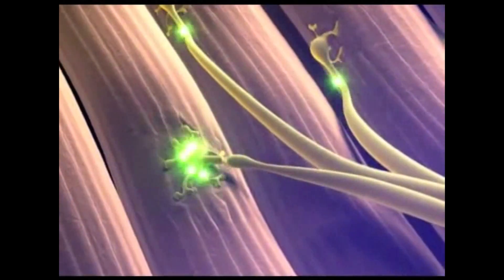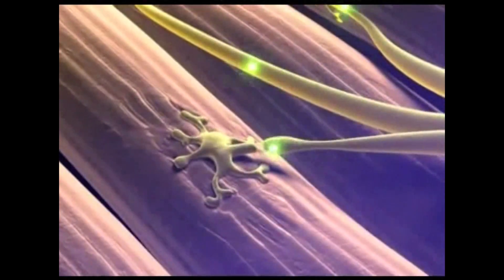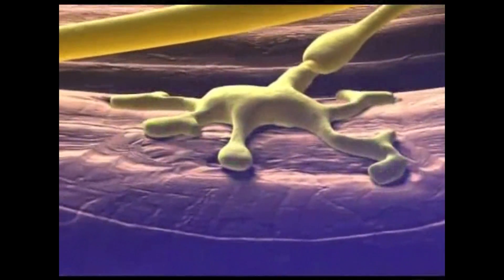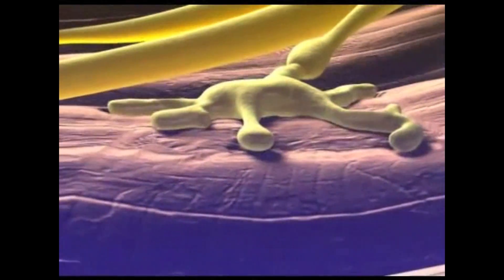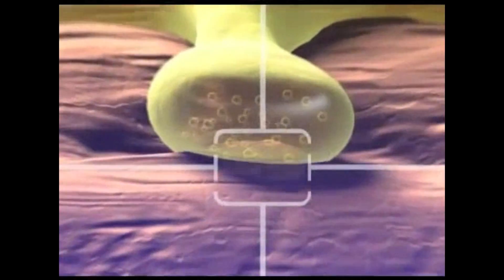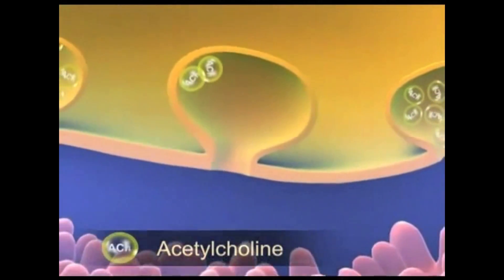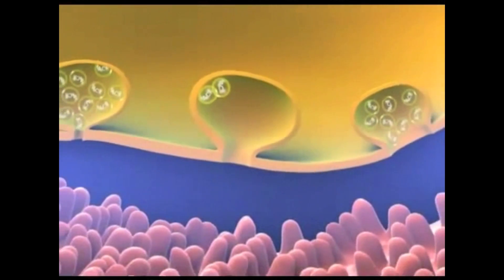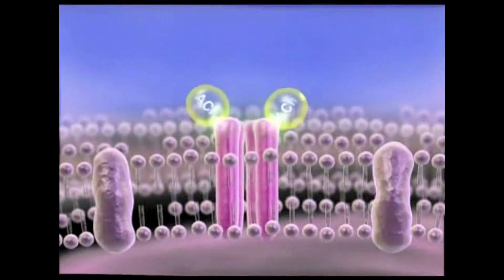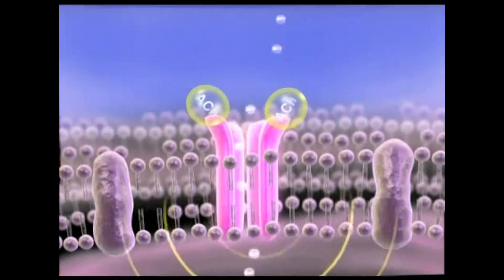Contraction of voluntary muscle fibers is a complex process, which starts with the arrival of nerve impulses at the terminals of the nerves at a special site known as the neuromuscular junction. The impulses cause the release from these nerve terminals of tiny packets of acetylcholine, a neurotransmitter chemical. Acetylcholine then combines with receptors in the muscle membrane and generates an electrical wave in the muscle fiber itself.